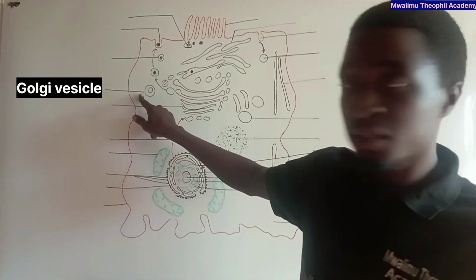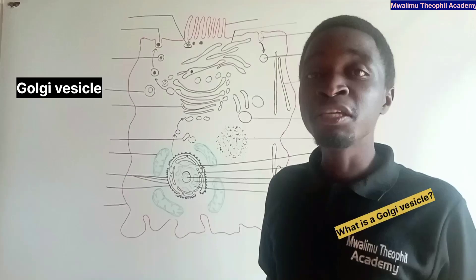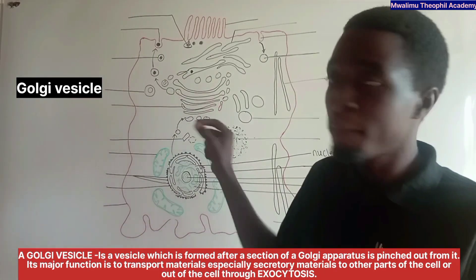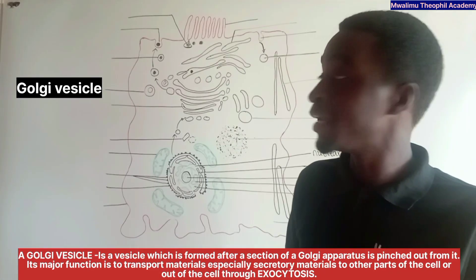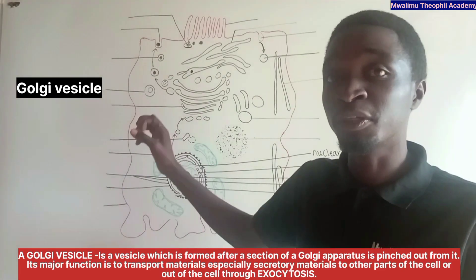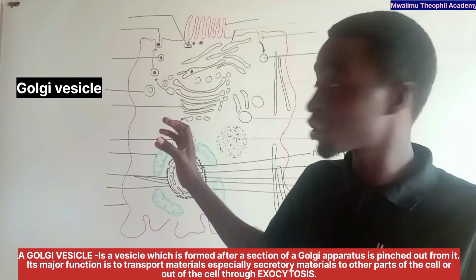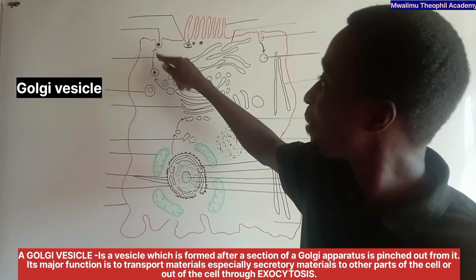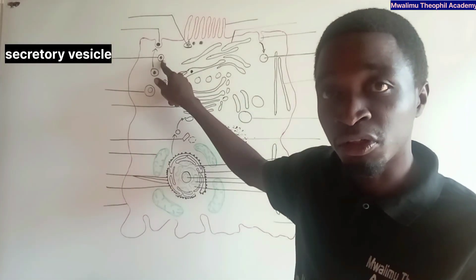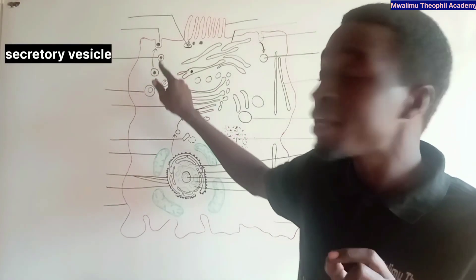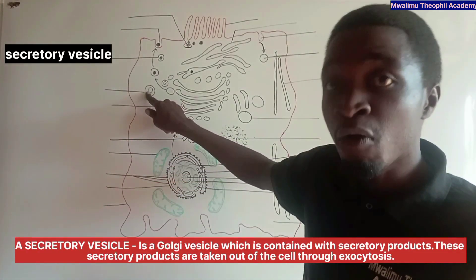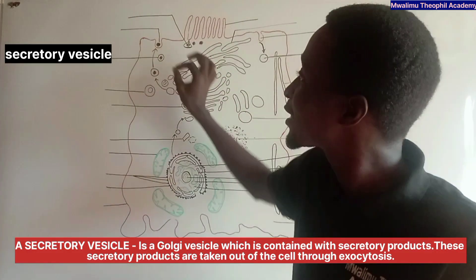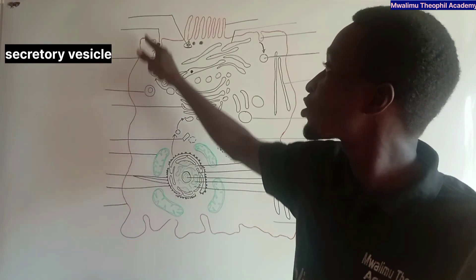This is a Golgi vesicle, which is formed after a section of the Golgi apparatus is pinched out from it. Its major function is to transport materials — especially secretory materials — to other parts of the cell for exocytosis. The secretory vesicle is the Golgi vesicle which contains secretory products, and these secretory products are taken out of the cell through exocytosis.